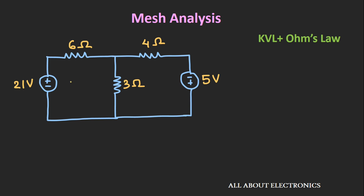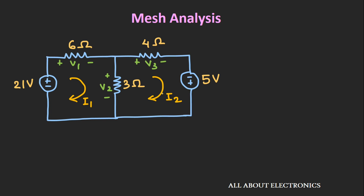Now if you see here, we have a total of two meshes in the given circuit — mesh number 1 and mesh number 2. Let's say I1 and I2 are the currents flowing through these meshes. These mesh currents are not the actual currents flowing through the circuit elements, but they help us find the actual currents. Before we apply Kirchhoff's voltage law, let's mark the voltages V1, V2, and V3 across the three resistors.